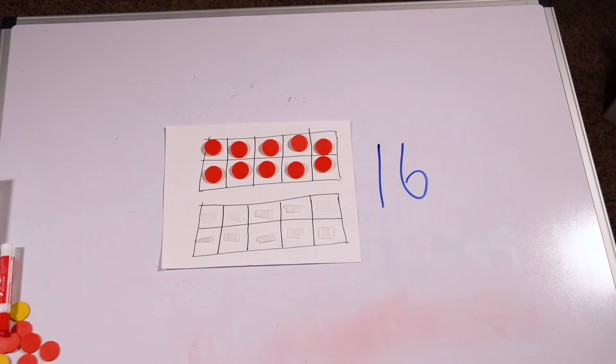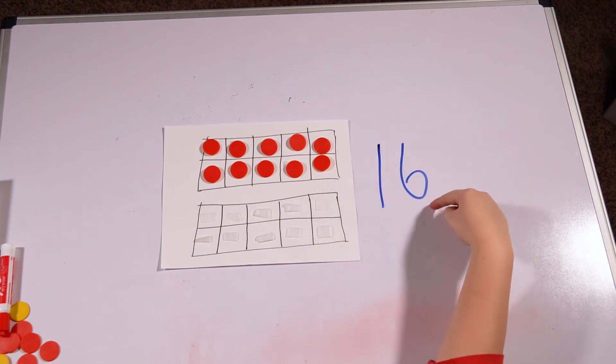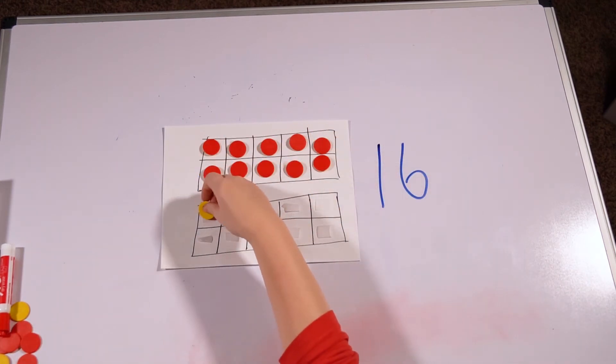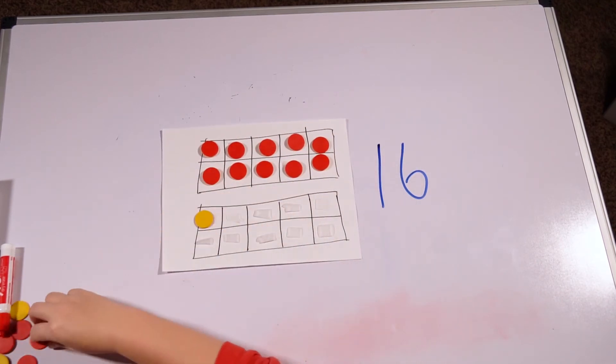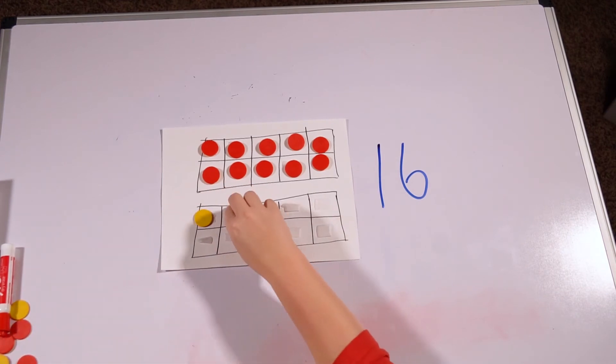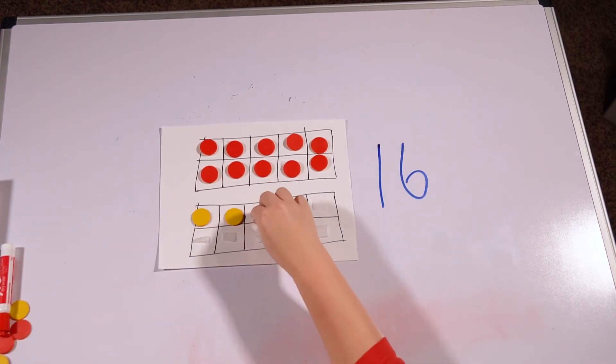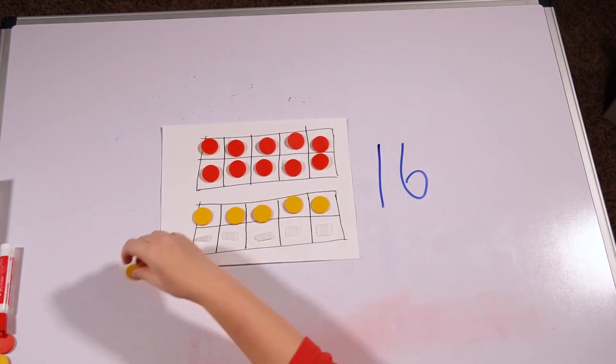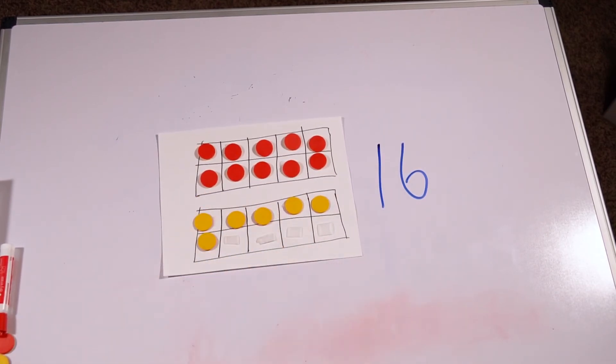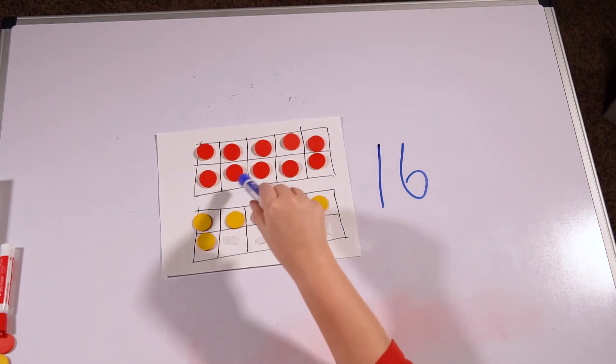All right, did you get it? Let's check and see. Now, I already have my 10, so I just need to add six more. 10, I don't need to count them because I know this is 10. 10, 11, 12, 13, 14, 15, 16. I just had to add six. Then I have 10 and six more makes 16.